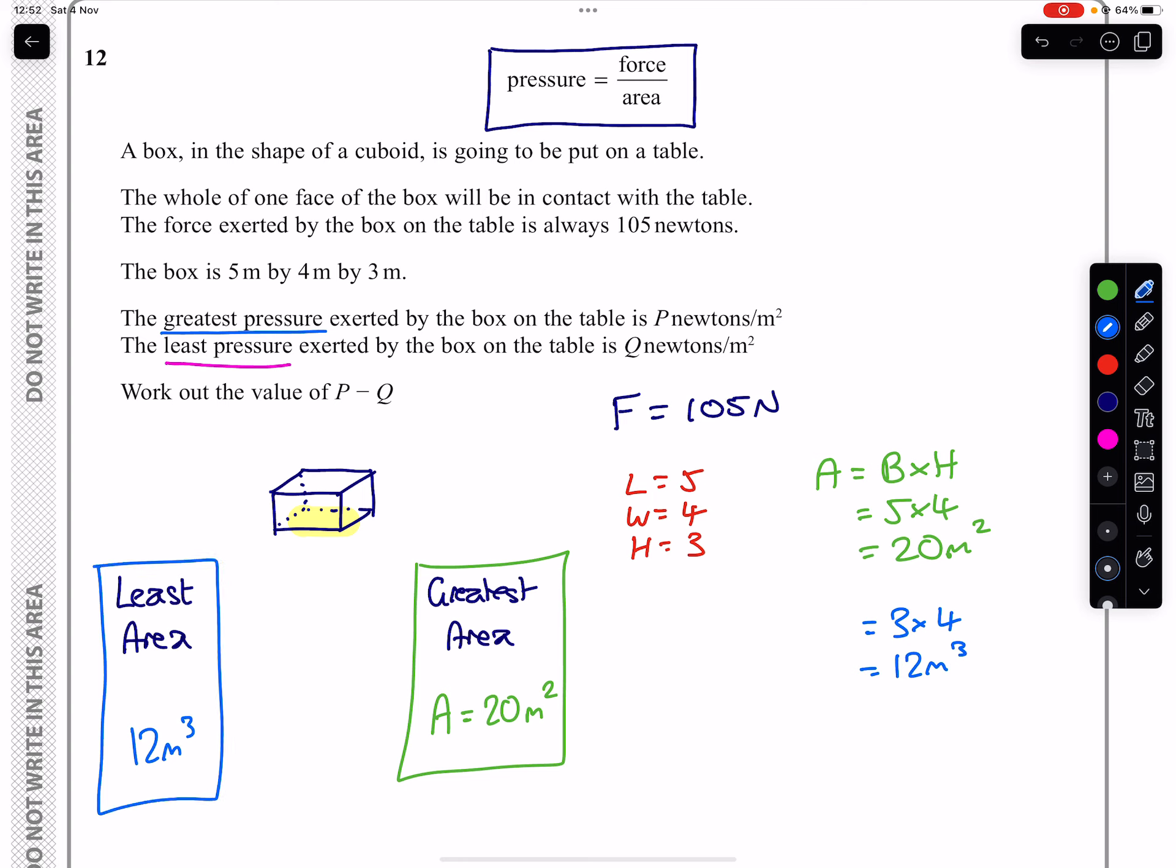And of course, let's just say you weren't sure and you just tried the other one anyway. If we did 5 times 3, we're going to get 15. And 15, of course, is not the greatest and not the least, so I won't bother writing it down.